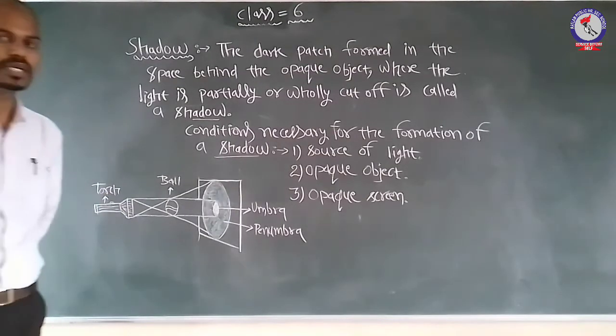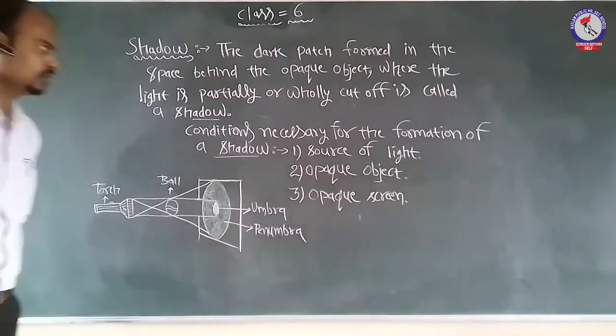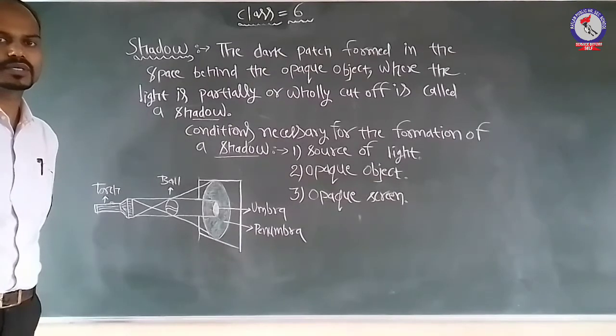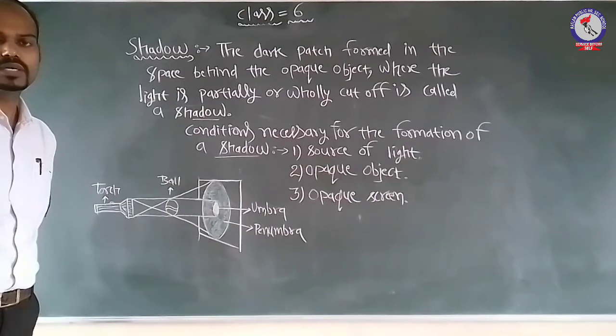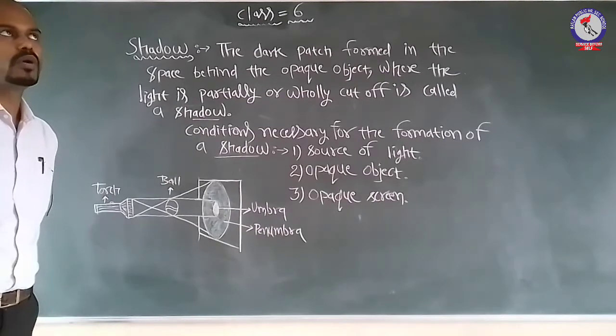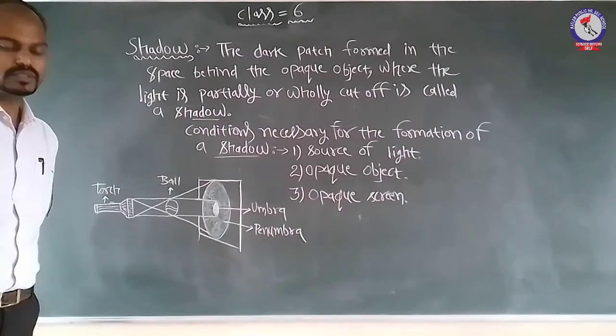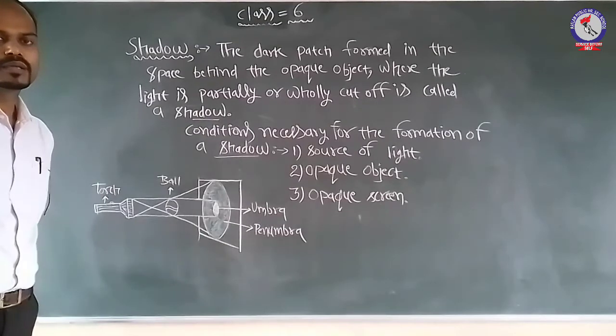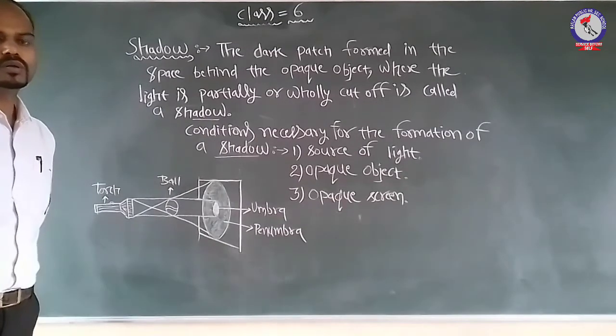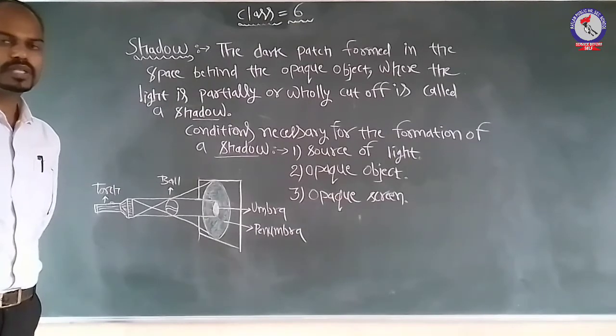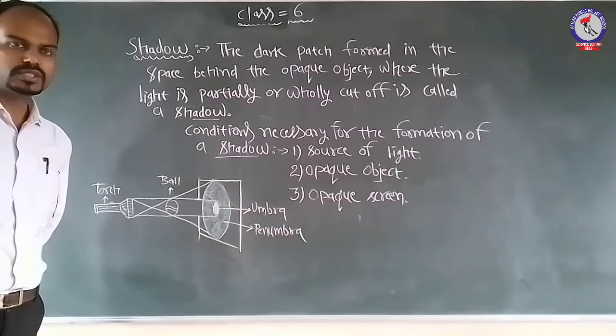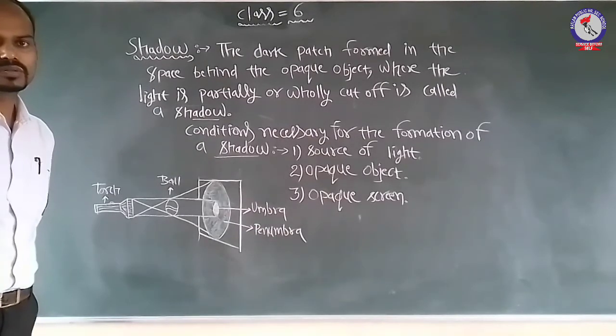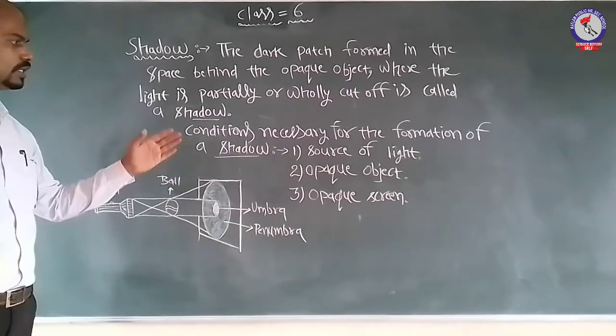The size may vary. The size of the shadow at different times is different. At noon, the shadow will be small because the sun is straight up. In the morning and evening, the sun is very low, so the shadow is larger. It depends on the position of the light source.